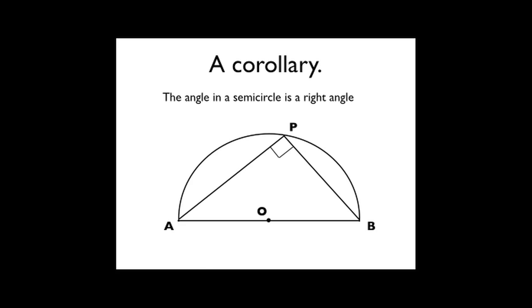A corollary from that theorem is that the angle in a semicircle is a right angle. See whether you can see why. Think about what the angle at the centre is and then think about what the angle on the circumference is.